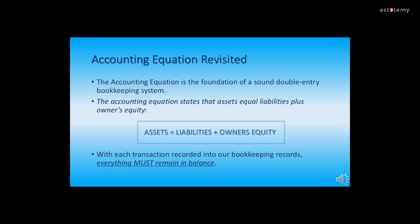Here we review the accounting equation. The accounting equation is the foundation of a sound double entry bookkeeping system. The accounting equation simply states that assets equal liabilities plus owner's equity. With each and every transaction recorded into our bookkeeping records, everything must remain in balance, and hopefully that is starting to make sense with these next few exercises.